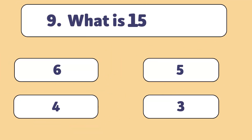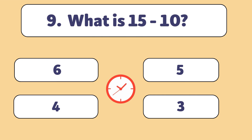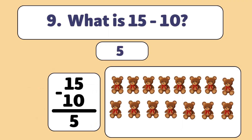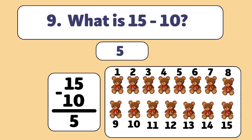What is 15 minus 10? The answer is 5. We start with 15 teddy bears and take away 10. Let's count: 1, 2, 3, 4, 5, 6, 7, 8, 9, 10. We have 5 teddy bears now.